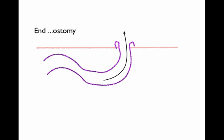Next we'll talk a little bit about the difference between an end and a loop. In this case, this is an end ostomy. It may be an ileostomy or a colostomy, but ultimately the piece of bowel ends at the abdominal wall and is a single lumen.